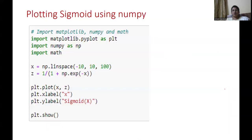Now let's see how to plot the sigmoid function using matplotlib. I will use matplotlib.pyplot, numpy, and also the math library. I am using the linspace method, taking values ranging between -10 to 10 with a total of 100 points. The equation 1/(1 + e^(-x)) can be written using numpy as np.exp(-x). The math library will handle the equation of the line internally.